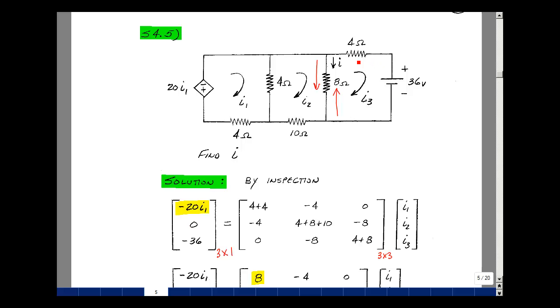Go to mesh 3, add up all the resistors. I get 8 plus 4. What's between meshes 3 and 2 will be in row 3, column 2, negated. So minus 8. Nothing between meshes 3 and 1, so a 0. Go around the mesh counterclockwise, and you see a minus 36.